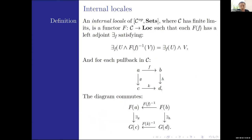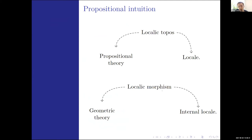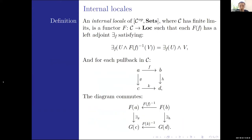So those are some examples of localic geometric morphisms. An internal locale of the presheaf topos, where C has finite limits, is going to be a functor from C into the category of locales such that all of our arrows have a left adjoint satisfying Frobenius reciprocity, and also the Beck-Chevalley condition holds. Note: those should be F's in the diagram — I forgot to change that. The locale morphism goes to the internal locale given by the direct image of the sub-object classifier, and similarly internal locales induce localic morphisms by the projection into C.